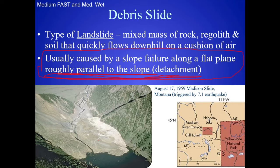In 1959 there was the Madison slide, which was one of the biggest landslides ever to occur in human history. It actually clogged up a river and created a lake — it dammed up the river where there was no lake before. They actually call this lake Quake Lake, because it was naturally created in 1959 by this Madison slide and an earthquake.